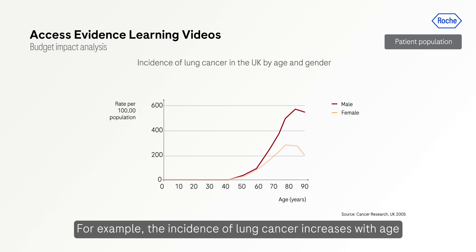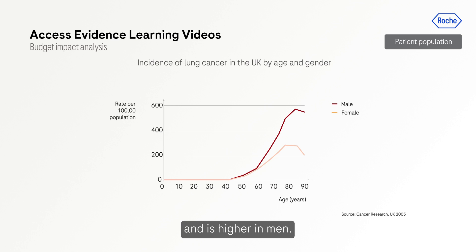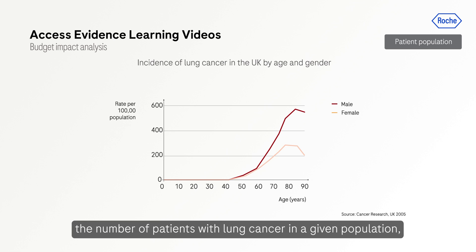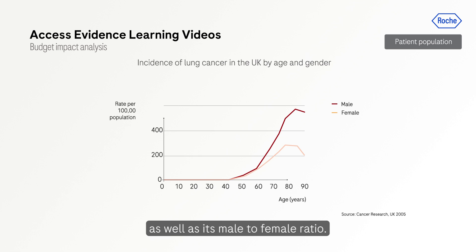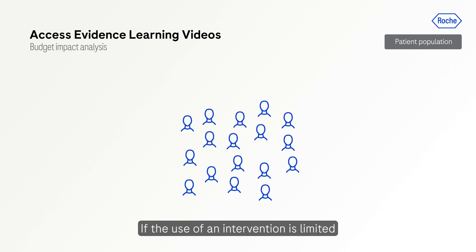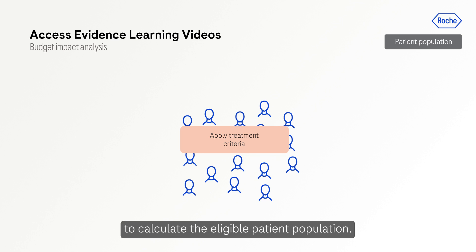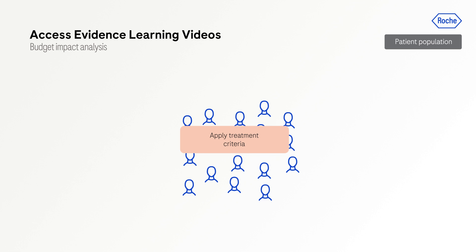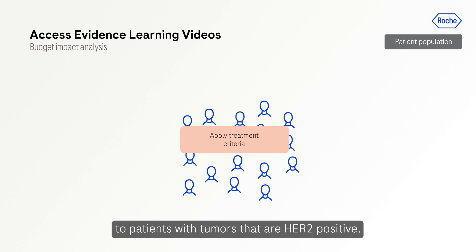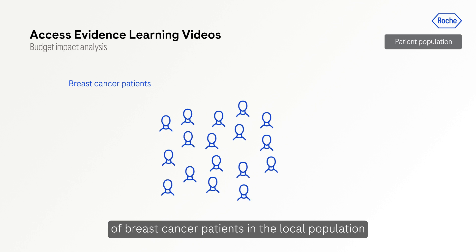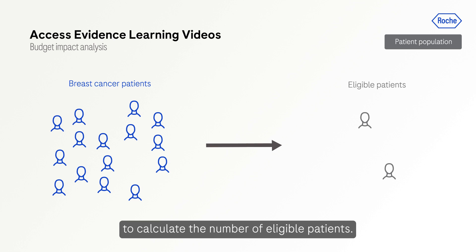For example, the incidence of lung cancer increases with age and is higher in men. Therefore, to accurately calculate the number of patients with lung cancer in a given population, the age demographics of the group will need to be considered as well as its male-to-female ratio. If the use of an intervention is limited to a particular patient subgroup, treatment criteria will also need to be applied. For example, if a product is restricted to patients with tumors that are HER2-positive, the rate of HER2-positive tumors needs to be applied to the number of breast cancer patients in the local population to calculate the number of eligible patients.